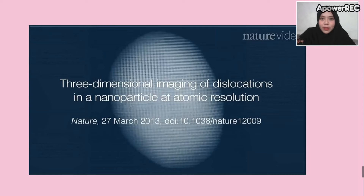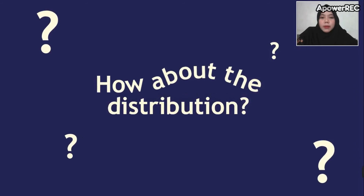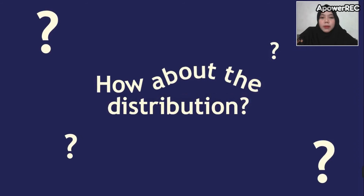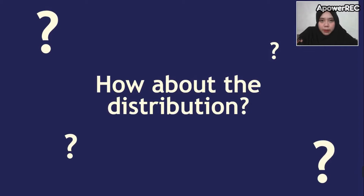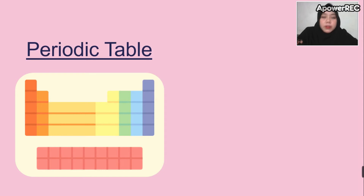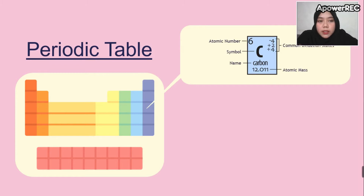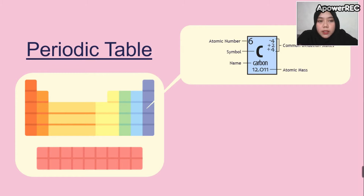The next question might be about the distribution of elements in the periodic table. Each element occupies one square in the periodic table with one or two letter chemical symbols. Above the chemical symbol is the atomic number, then the symbol itself, the full name of the element, the atomic mass, and the common oxidation states.